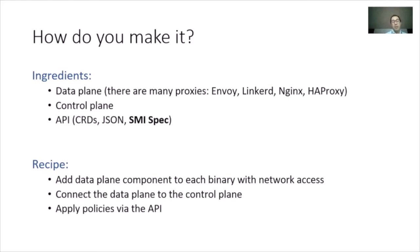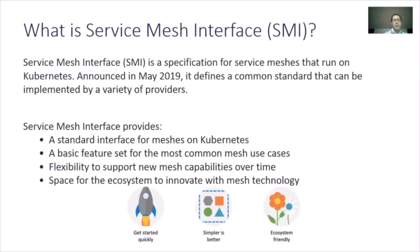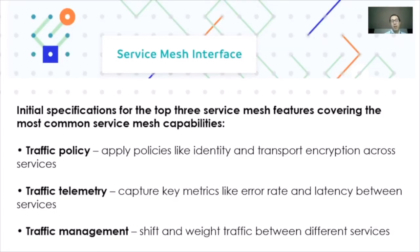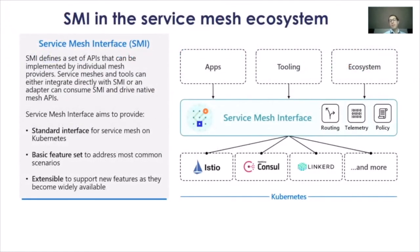Now let's talk about the Service Mesh Interface specifically. SMI was announced by Microsoft in May 2019. It is a specification for service meshes that run on Kubernetes — a common standard that can be implemented by a variety of providers. SMI has three pillars: traffic policy, traffic telemetry, and traffic management. You can define routing, telemetry, and traffic policies in an abstract way and apply them to different vendors — Istio, Consul, or Linkerd — using the same declarations.